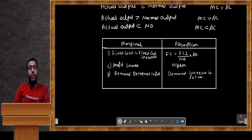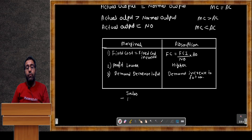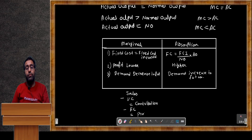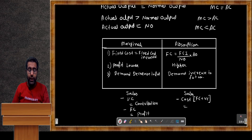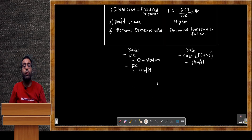The income statement format: In marginal costing — Sales minus variable cost gives contribution; from contribution deduct fixed cost to get profit. In absorption costing — Sales minus total cost (which comprises fixed cost plus variable cost) gives profit. These are the income statements for both cases.